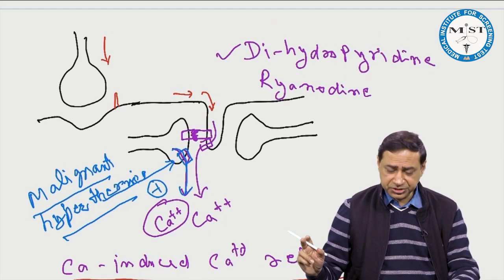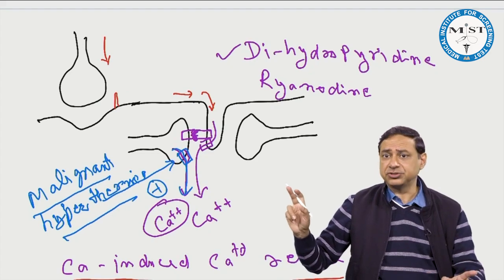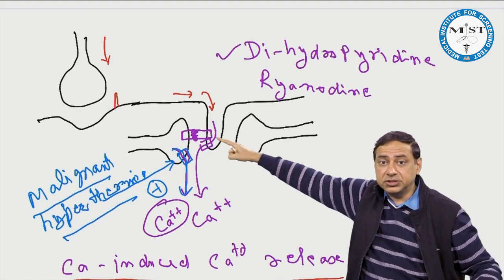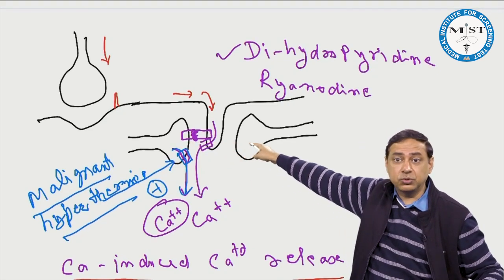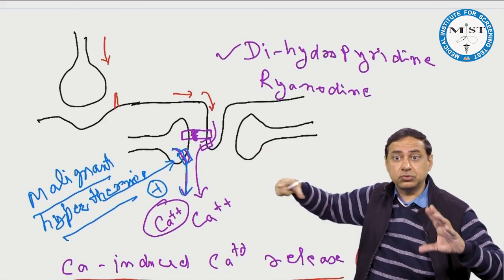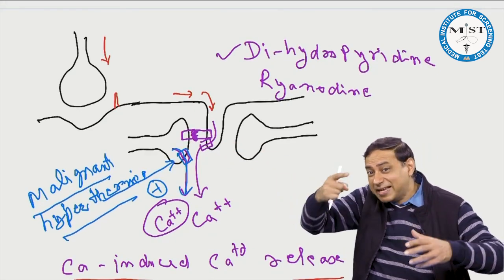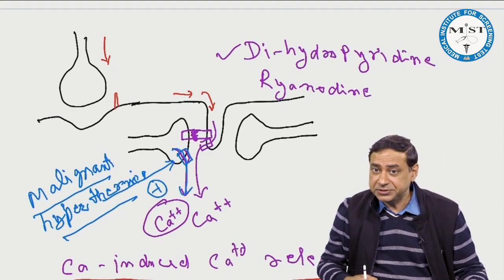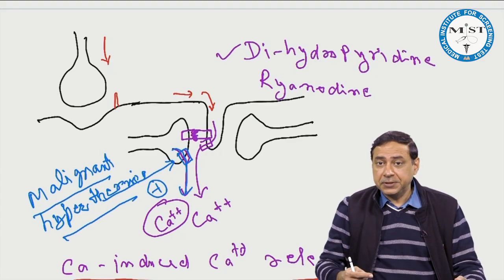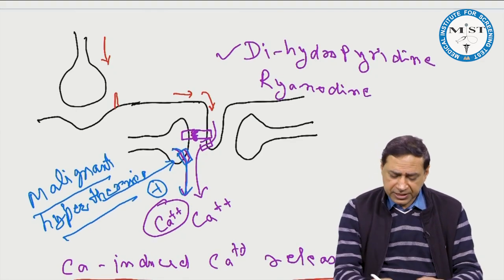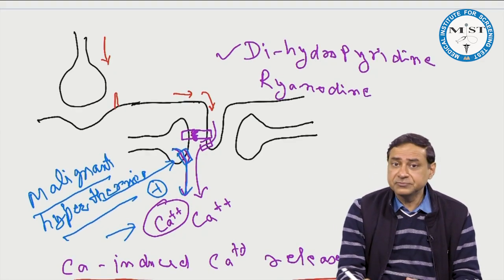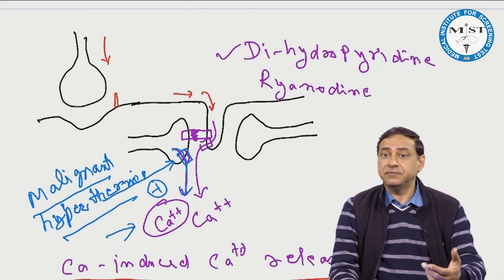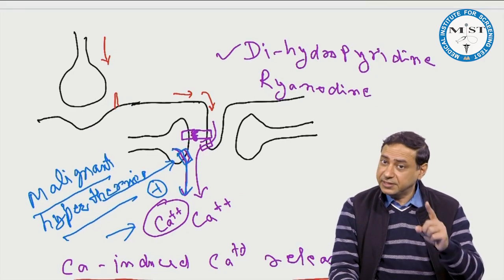This is all about excitation-contraction coupling and the sarcotubular system — the T-tubule along with the sarcoplasmic reticulum. How this calcium, which is released, will ultimately cause contraction will be discussed in the next video. Thank you very much.